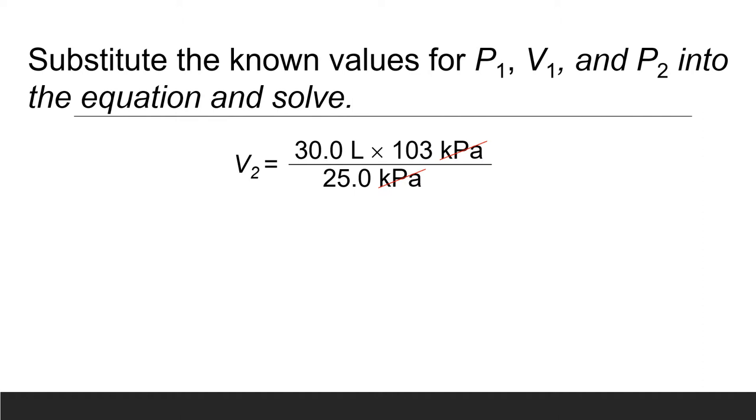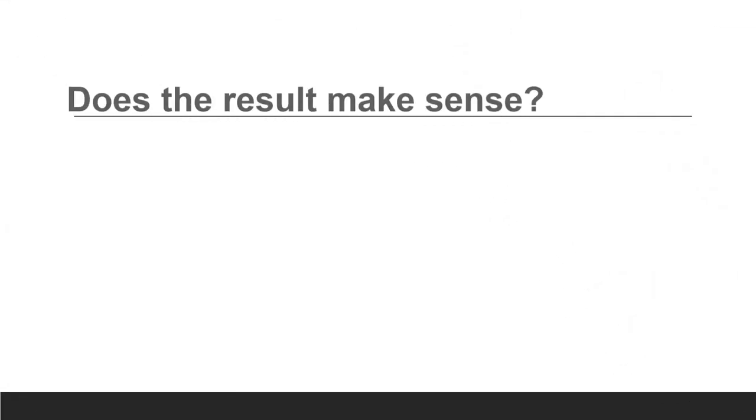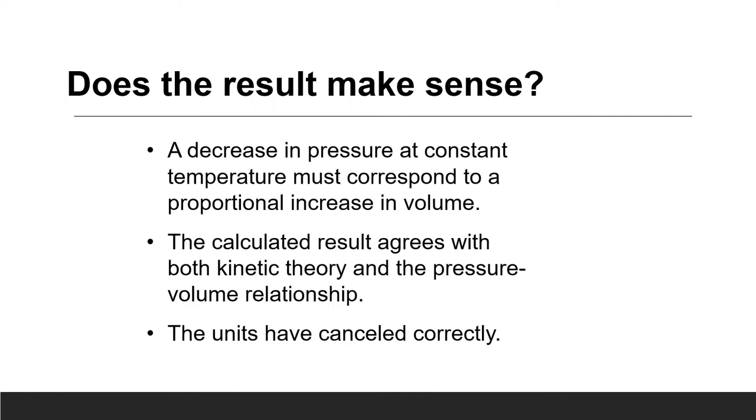Let's compute. Substitute: 30 liters times 103 kilopascal over 25 kilopascal. Both units have kilopascal, so they cancel out. 30 times 103 divided by 25 equals 123.6 liters, or in scientific notation, 1.24 times 10 to the second power liters. The result makes sense because a decrease in pressure at constant temperature must correspond to a proportional increase in volume.